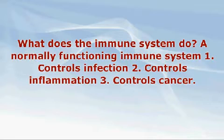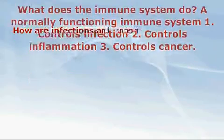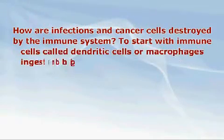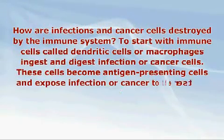What does the immune system do? A normally functioning immune system: one, controls infection; two, controls inflammation; three, controls cancer. The immune system is balanced in health — cancer and infection are under regular surveillance and destroyed to maintain good health, and inflammation is controlled in order to reduce damage to the body.